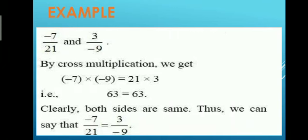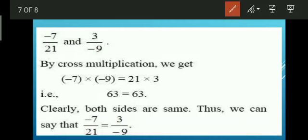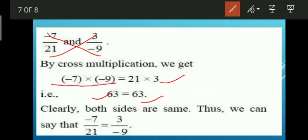For example: compare minus 7 over 21 and 3 over minus 9 using cross multiplication. Multiply minus 7 by minus 9 to get 63, and multiply 3 by 21 to also get 63. Both sides are equal, which means these two rational numbers are equal.